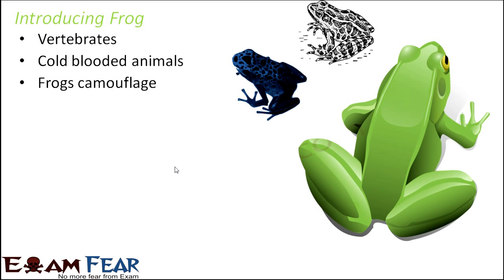Frogs camouflage — that means they can change their colors depending on the situation. For example, if a frog suddenly sees a predator, in order to save itself, it will change its color. If the frog is among green trees and bushes, it will change its color to green and hide, so the predator cannot identify it. This is known as camouflage — changing color as per the environment to save itself.